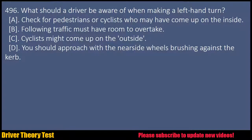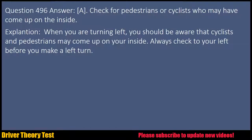Question 496: What should a driver be aware of when making a left-hand turn? A. Check for pedestrians or cyclists who may have come up on the inside. B. Following traffic must have room to overtake. C. Cyclists might come up on the outside. D. You should approach with the nearside wheels brushing against the curb. Answer: A. Check for pedestrians or cyclists who may have come up on the inside. Explanation: When you are turning left, you should be aware that cyclists and pedestrians may come up on your inside. Always check to your left before you make a left turn.